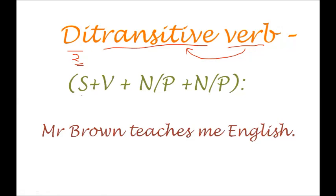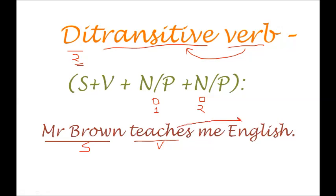The construction of a ditransitive sentence is: subject + verb + noun/pronoun + noun/pronoun — that is, two different objects appear with the verb. Here is the first object and there is the second object, so two different objects are present. That's why this is called a ditransitive verb. For example: 'Mr. Brown teaches me English.' Here 'teaches' is the verb, 'Mr. Brown' is the subject, 'English' is one object, and 'me' is another object.